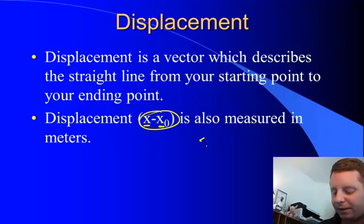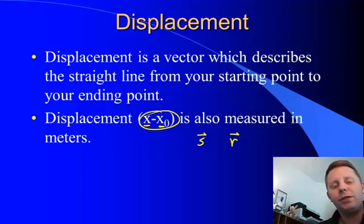Sometimes you'll even see that written as s with a line over it showing it's a vector, or sometimes r with a line over it showing it's a vector. So it has several different symbologies, and it really depends on exactly what course you're taking and what book you're using.